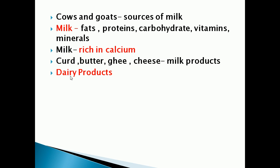Milk is said to be a complete food. Why is milk called a complete food? Because it contains all the nutrients which are essential for our body. It is rich in calcium and contains fats, proteins, carbohydrates, vitamins, and minerals. So milk is called complete food.